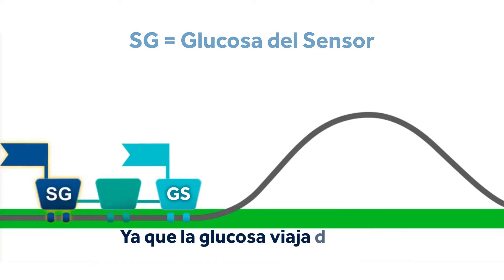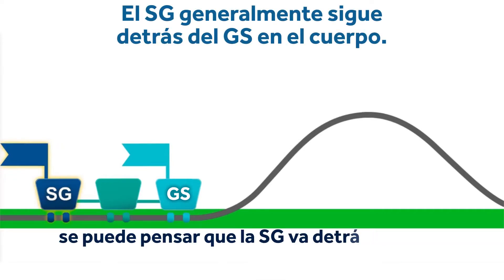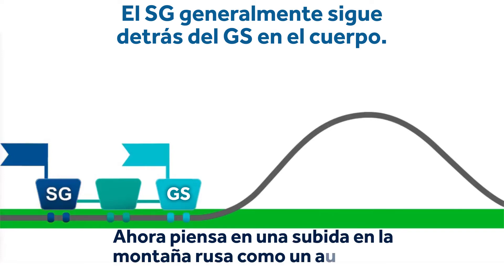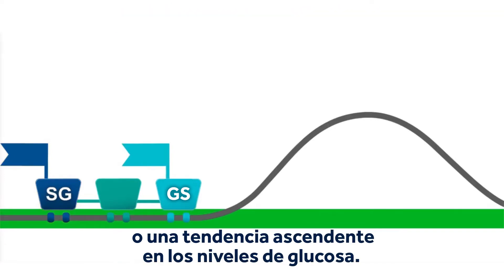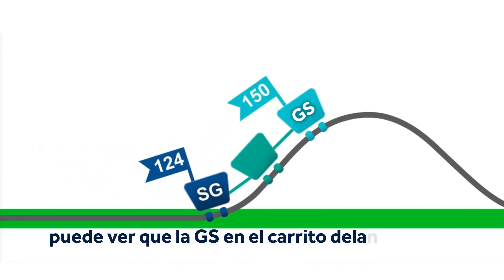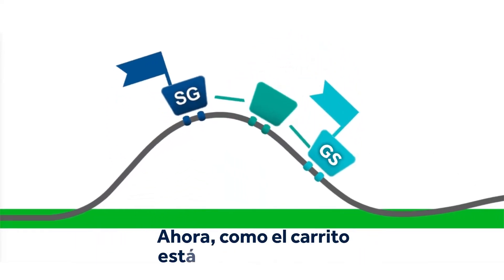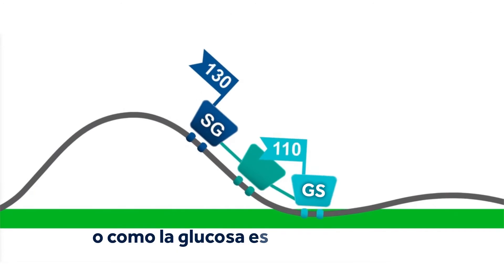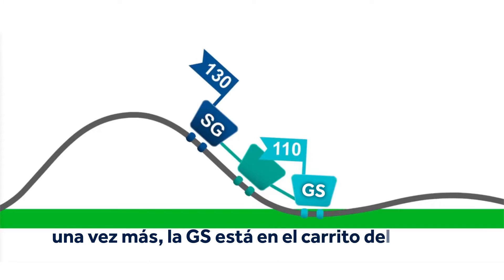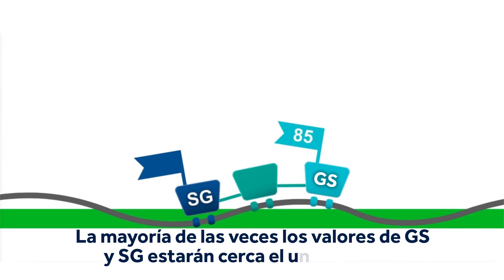Since glucose travels from the blood into the interstitial fluid, you can think of SG as following behind BG. Now think about going up a hill on the roller coaster as a rise or upward trend in glucose levels. As the roller coaster starts up the hill, you can see that the BG in the front car is leading the SG in the back car. Now as the cars head down the hill, or as glucose is decreasing or trending down, once again the BG is in the front car. Most often, the BG and SG numbers will be close to each other.